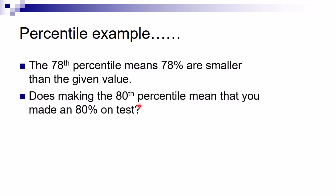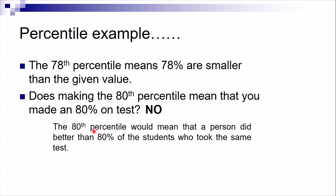Does being in the 88th percentile mean that you made an 88% on the test? Definitely no. What percentile means is that being in the 88th percentile means the person did better than 88% of the students who took the same test — meaning you outperformed 88% of your classmates.